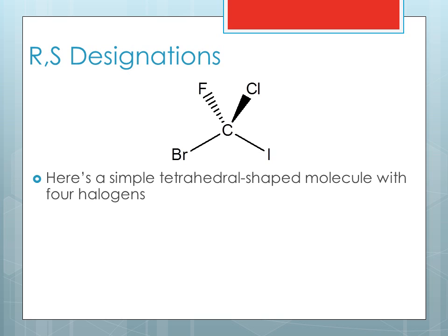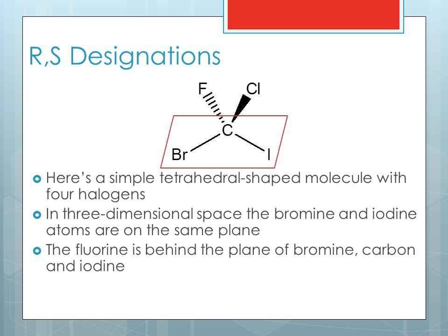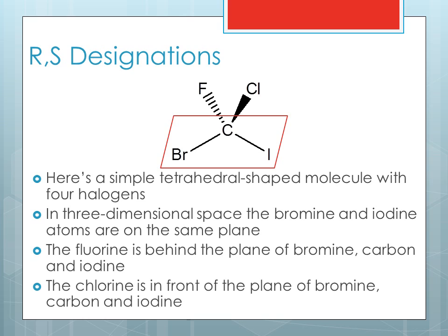Here's a simple tetrahedral-shaped molecule with four halogens. In three-dimensional space, the bromine and iodine atoms are on the same plane, as shown here. The fluorine would be behind the bromine, carbon, and iodine, as indicated with a dashed wedge.